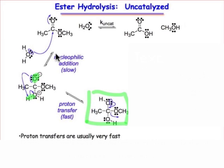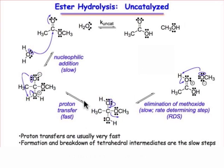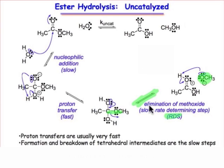Each of these two steps — the ADN step and the proton transfer — are fast relative to the next step. The next step is a very slow step: a beta elimination that involves the loss of that carbon-oxygen bond to kick out the leaving group, methoxide, and make this protonated ketone. That's the rate determining step, and that's the step we'll use to write the rate expression. The last step involves a proton transfer to make neutral methanol and the carboxylic acid.